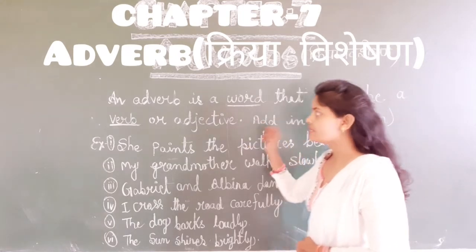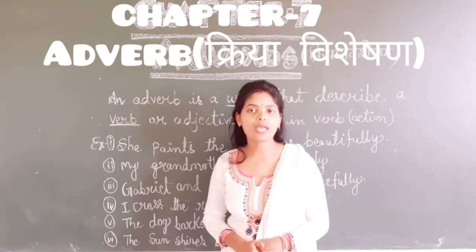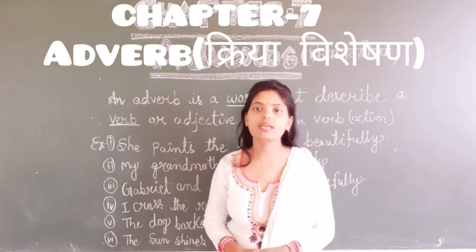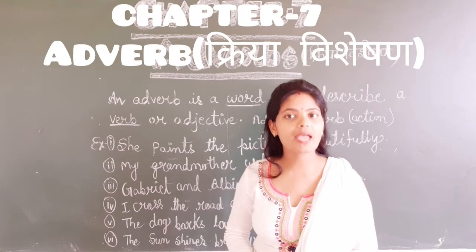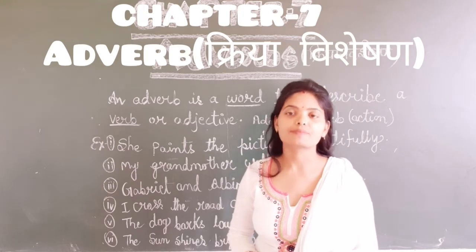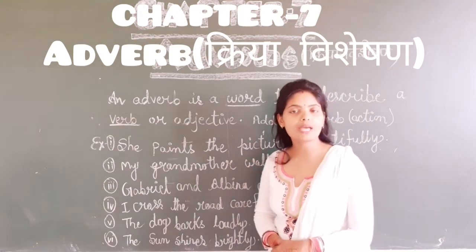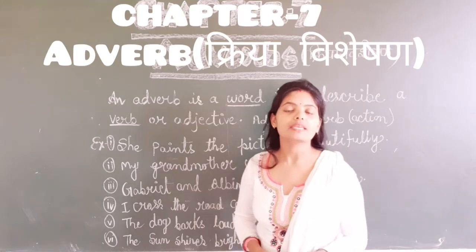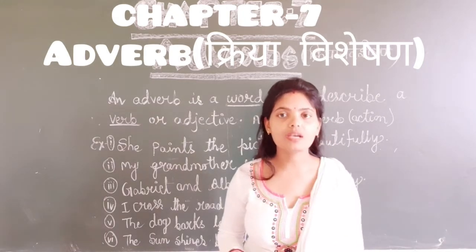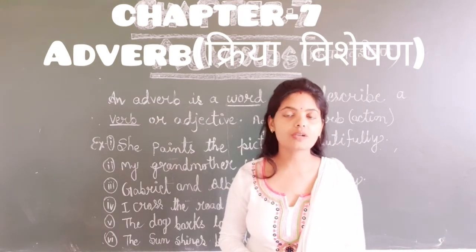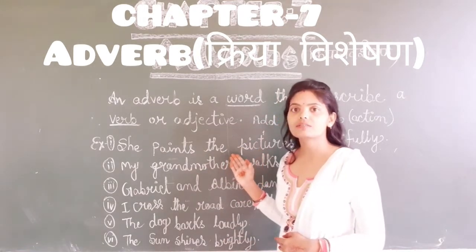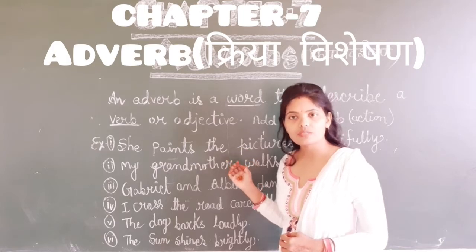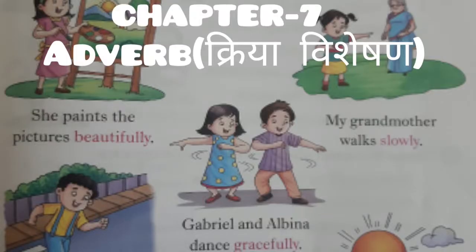So what is a verb? Action verbs — these words are called verbs. Like dance, paint, cross the road, sign. These words are called action verbs.